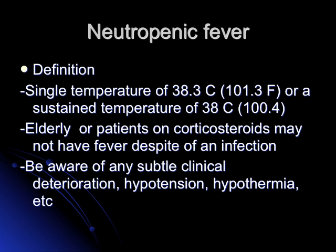What is the definition of neutropenic fever? A single temperature of 38.3°C (101.3°F) or a sustained temperature of 38°C (100.4°F). Remember that elderly patients or patients on steroids may not have fever and still be bacteremic, because as you age, the signs of infection may be subtle. You need to pay attention to blood pressure, heart rate, and even respiratory rate.